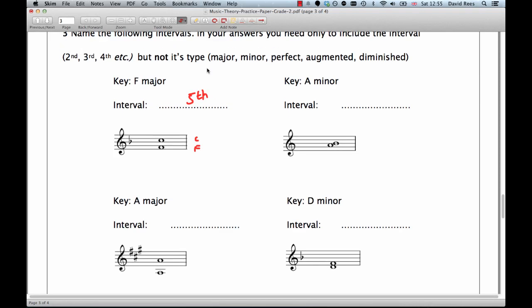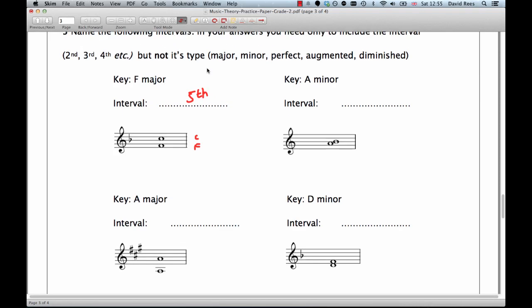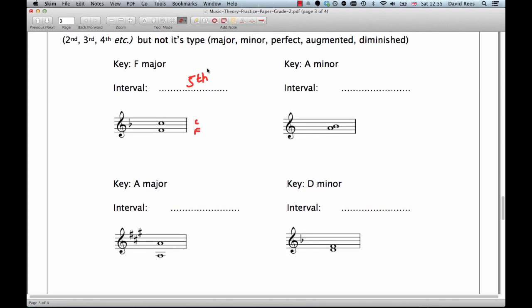Got this thing here. It's the key of A minor. Again, quite important to just be aware of what the key is that we're working in for each example. The interval here is much smaller than it was in the first question. We have an A and a B. So these notes are exactly next to each other.